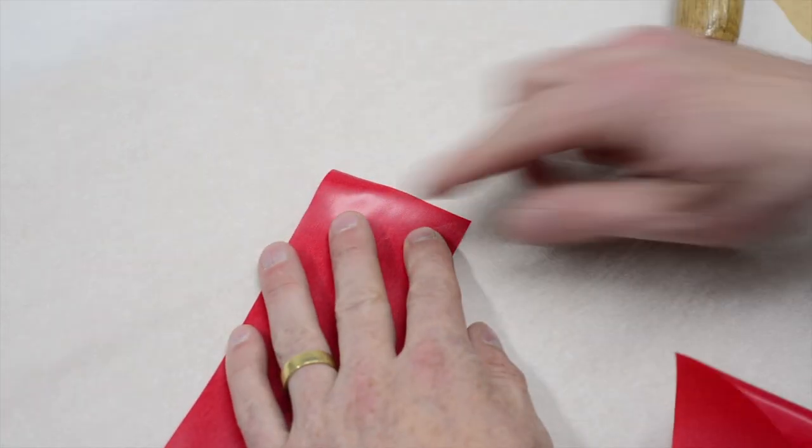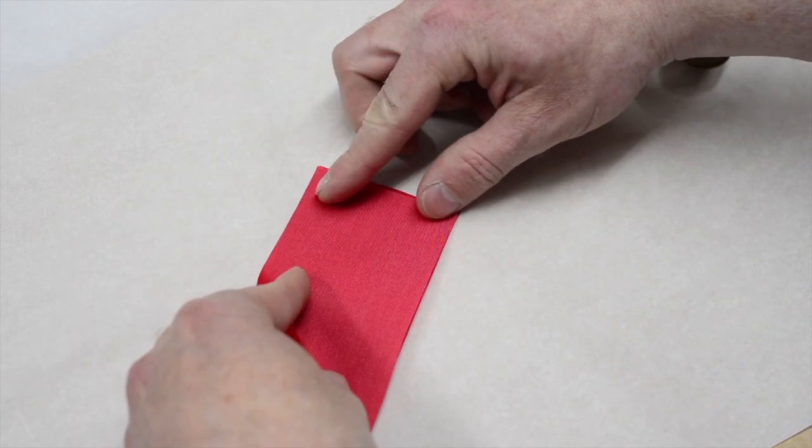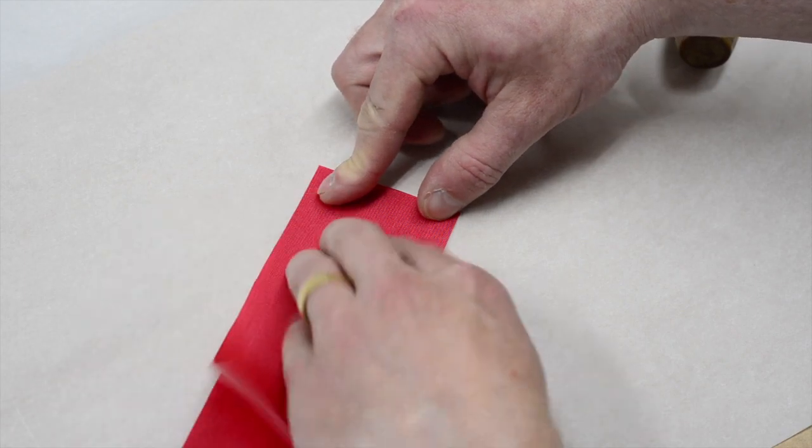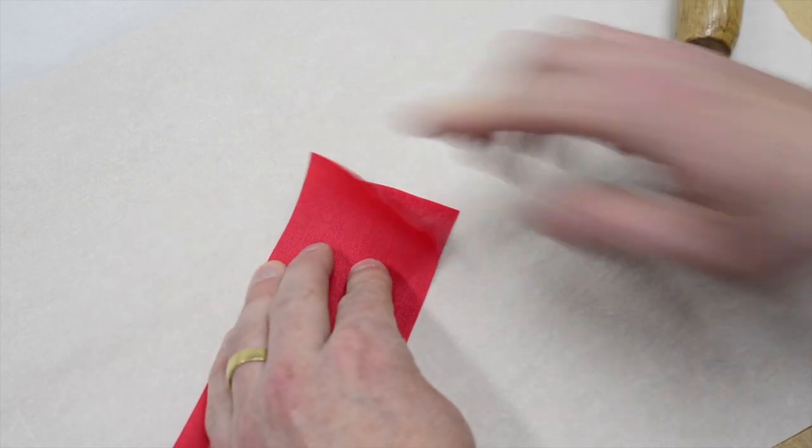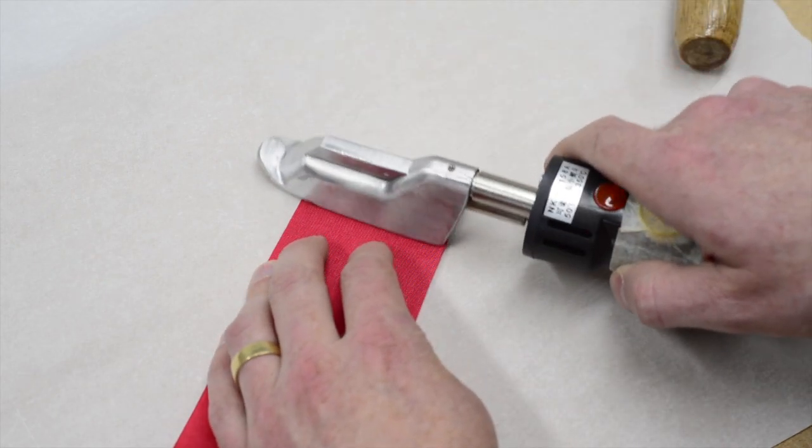Now let's try two pieces of the standard DIY packraft tube fabric. These are both coated on one side with TPU and they are what the tubes and seam strips are made from in the non-ultralight DIY packraft kits.